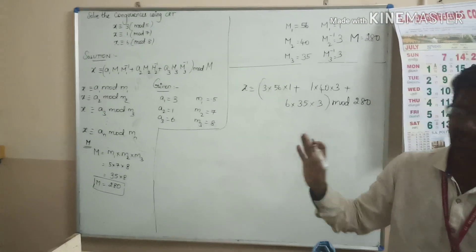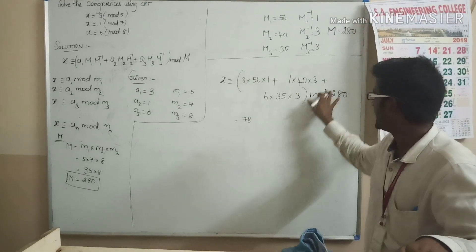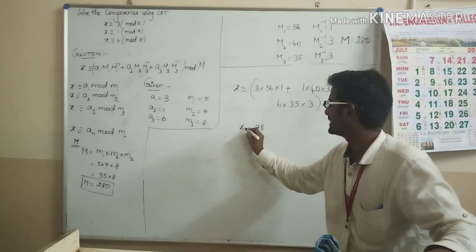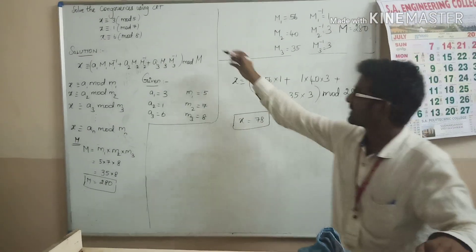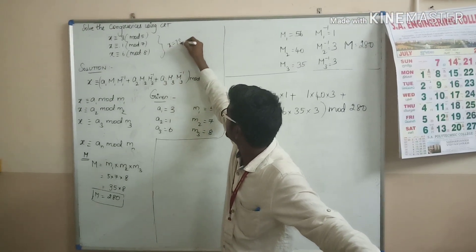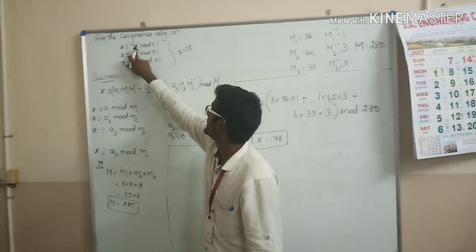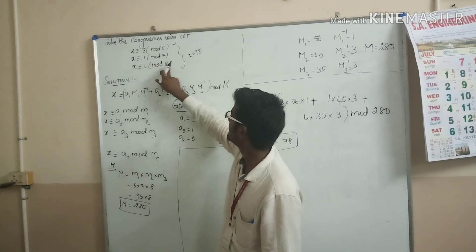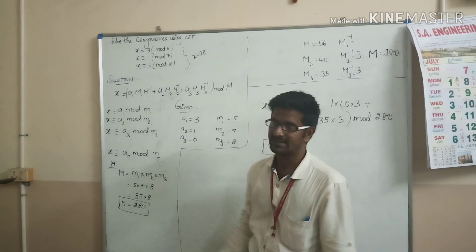When you solve this, you will get x to be 78. Divide that value with 280 and you will get the final remainder as 78. To verify: 78 ÷ 5 gives remainder 3 ✓; 78 ÷ 7 gives 11 × 7 = 77, remainder 1 ✓; 78 ÷ 8 gives remainder 6 ✓.